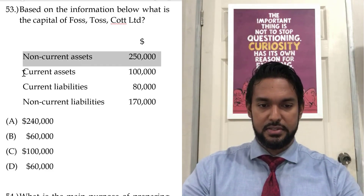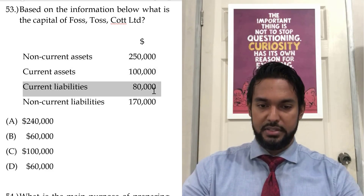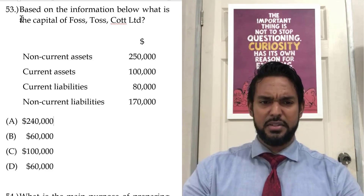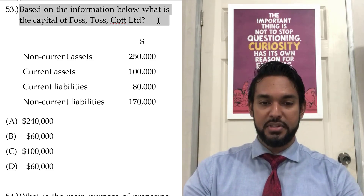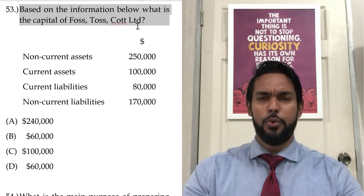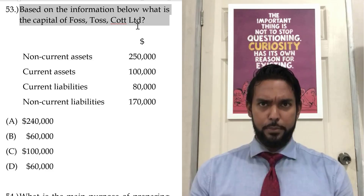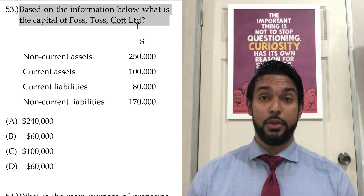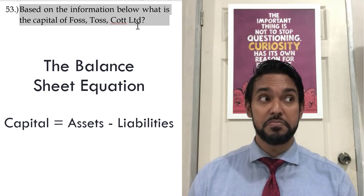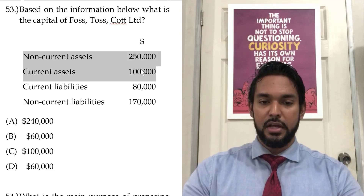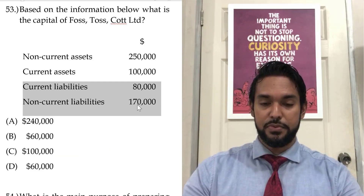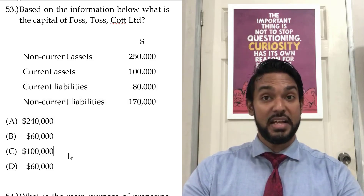So what do we have? Non-current assets, current assets, current liabilities, non-current liabilities — that looks like balance sheet information. What are they asking? What is the capital? Capital is whatever the owner brings in to start or maintain the business. Our accounting equation says capital equals assets minus liabilities. We add up assets: 250 and 100 is 350,000. Liabilities: 80 and 170 is 250. So 350 minus 250 gives us 100,000 of net assets or capital.